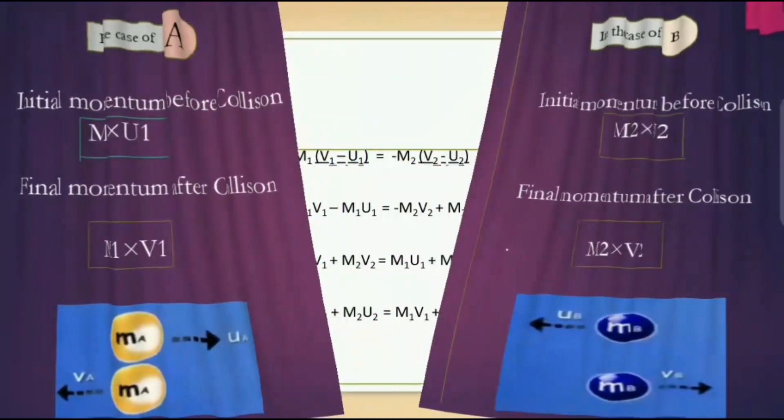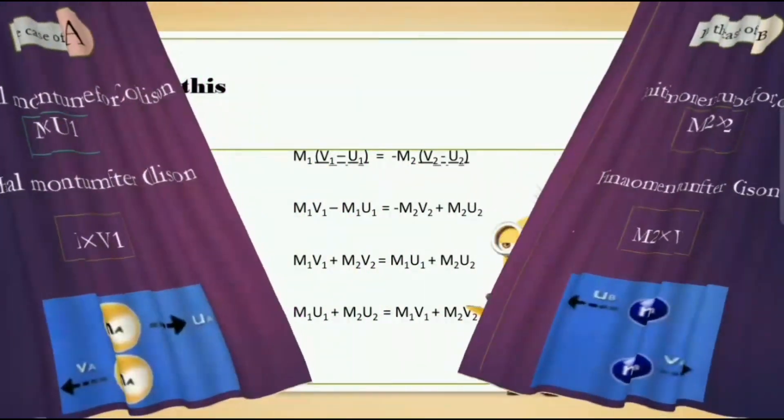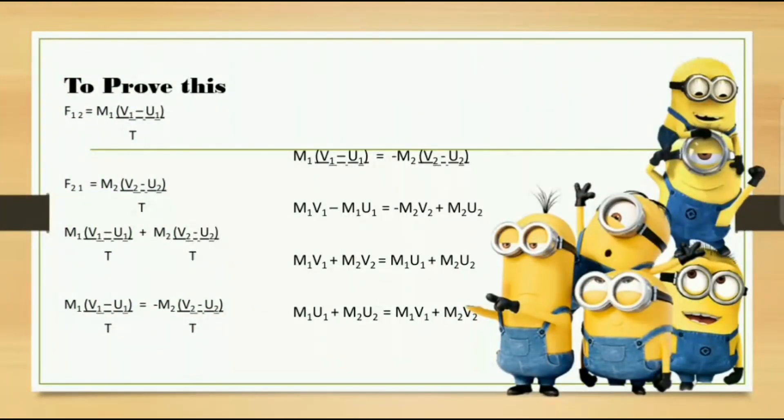Now we will prove this statement. Rate of change of momentum of first object on second object is f12 equals m1 into v1 minus u1 divided by t. Rate of change of momentum of second object on first object is f21 equals m2 v2 minus u2 divided by t. After merging these two equations and sending the value of f21 to the RHS side, we will get the equation m1 v1 minus m1 u1 equals minus m2 v2 plus m2 u2.